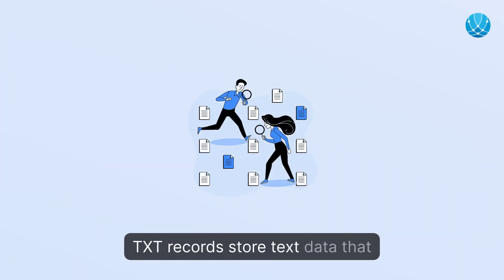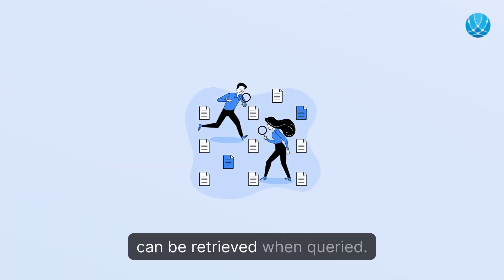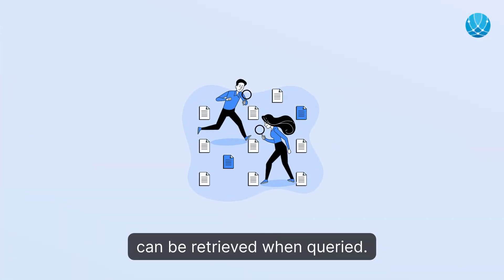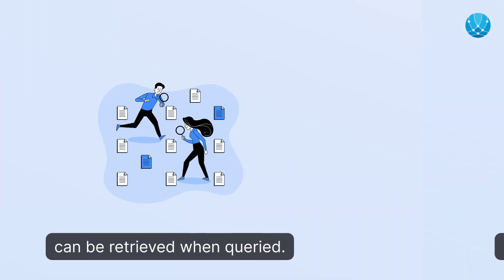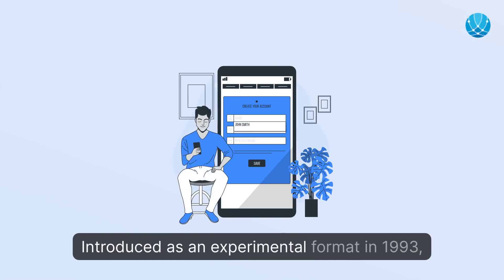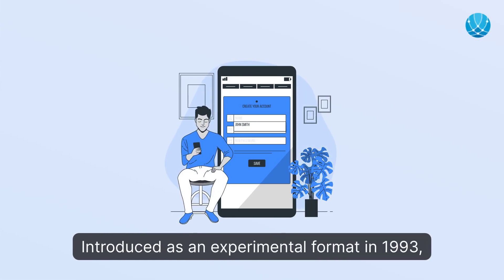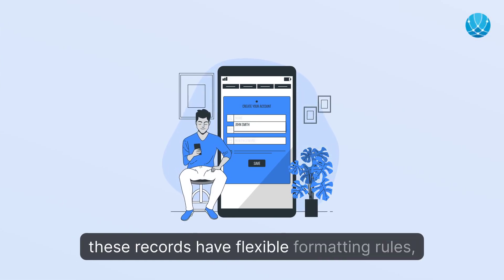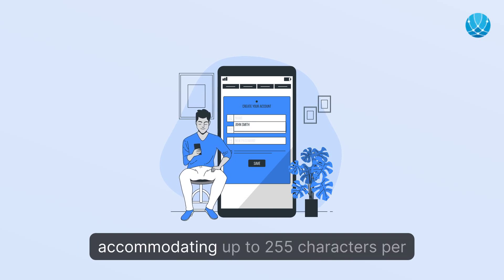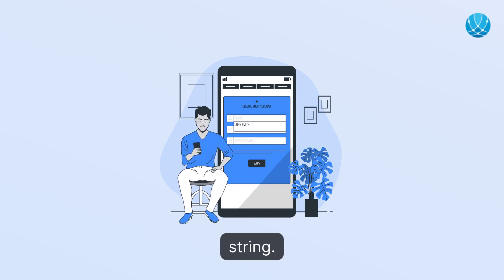Text records store text data that can be retrieved when queried. Introduced as an experimental format in 1993, these records have flexible formatting rules, accommodating up to 255 characters per string.